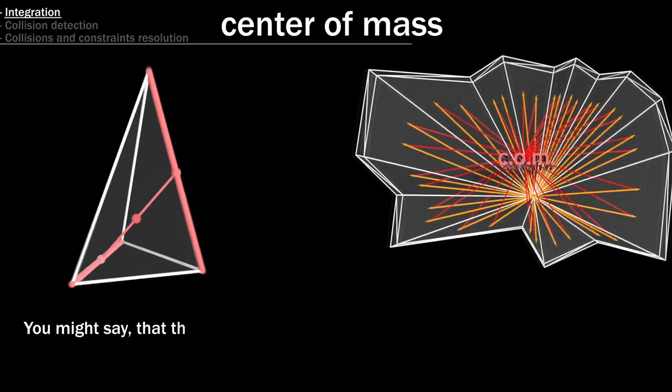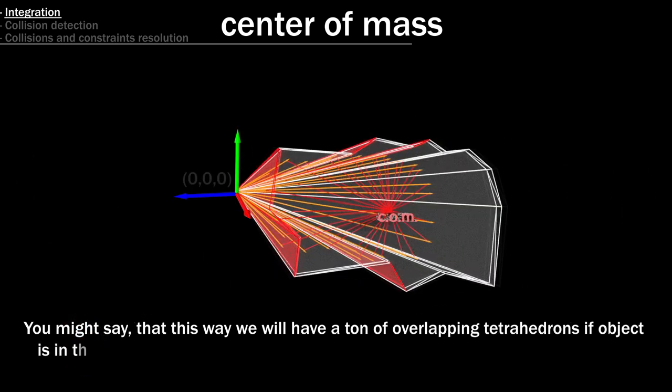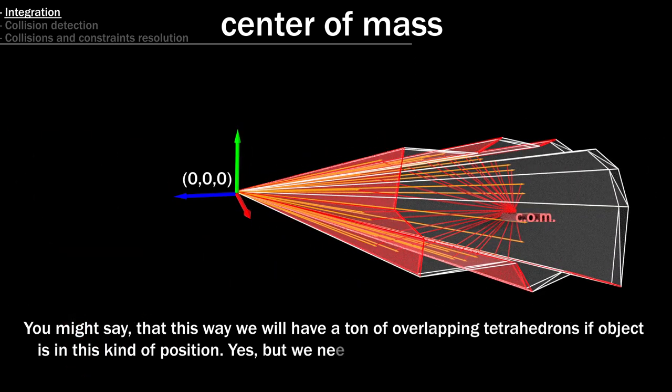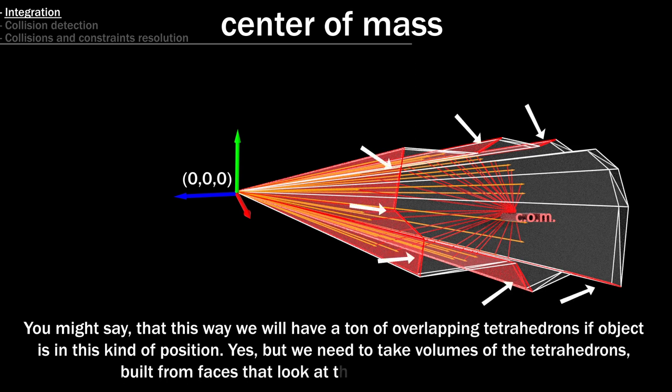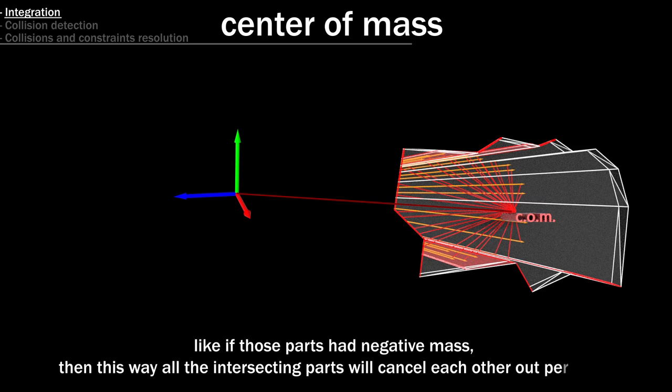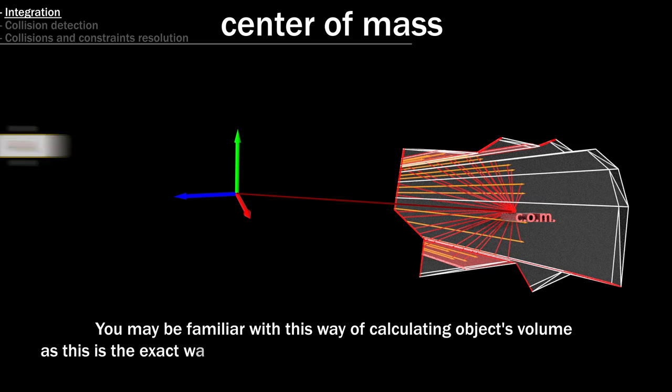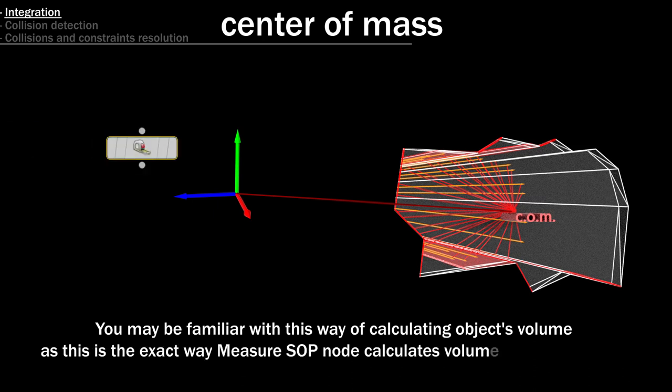You might say, that this way we will have a ton of overlapping tetrahedrons if object is in this kind of position. Yes, but we need to take volumes of the tetrahedrons, built from faces that look at the origin, with negative sign. Like if those parts had negative mass, then this way all the intersecting parts will cancel each other out perfectly. You may be familiar with this way of calculating objects volume, as this is the exact way measure SOP node calculates volume for each polygon.